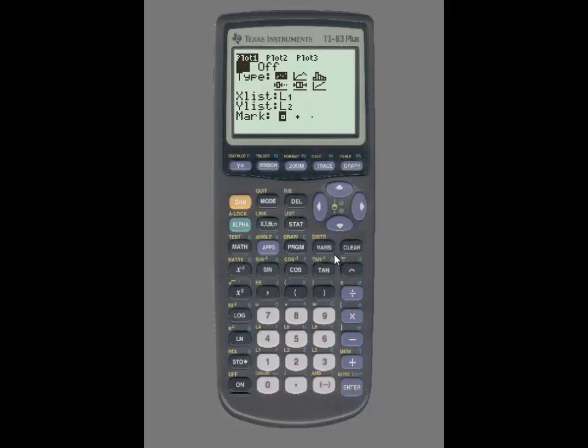Then, using the down arrow key, I'm going to go to Type, and you'll see that the histogram is the third option. In order to get there, you're going to use the right arrow key and press Enter. So now that you have the histogram highlighted, you'll use the down arrow key to enter your list.